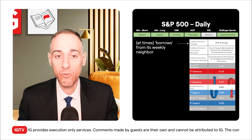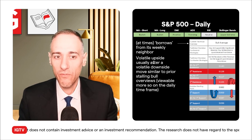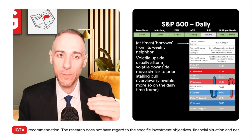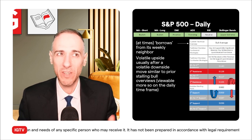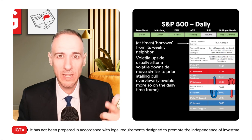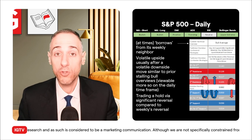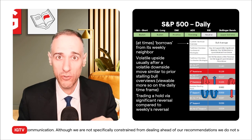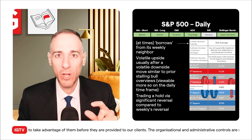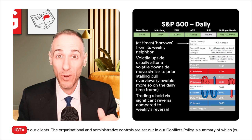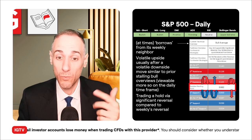The strategies are the same in terms of conformance and contrarian camp because it's the same overview. But on the daily time frame you'll often get volatile upside movement usually after a volatile downside move — it creeps up, creeps up, then a big move. This is usually more viewable under a daily time frame because on the weekly you're just seeing it slowly creep up. For those who want to trade a hold on the daily time frame, keep in mind the levels are narrower. Instead of going for a reversal off the first resistance or first support, go for a significant reversal — buy after a significant reversal off the first support, or sell after a significant reversal off the first resistance.